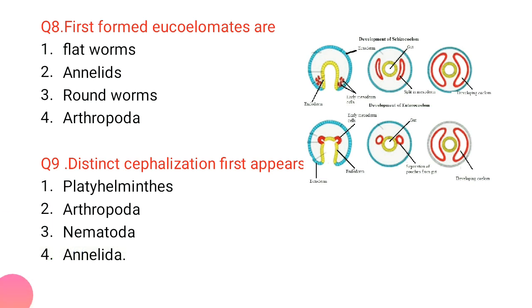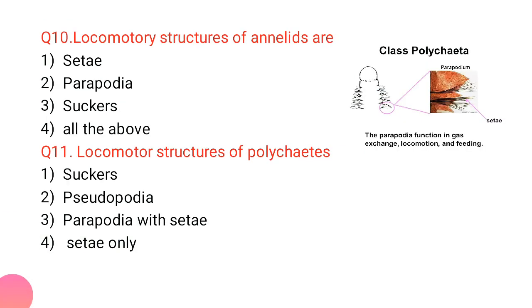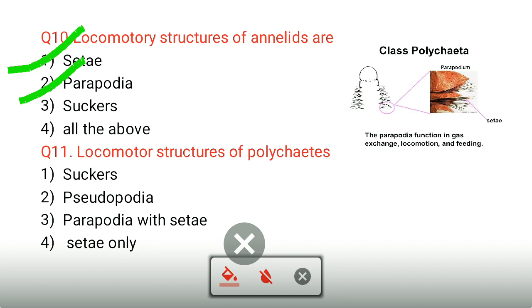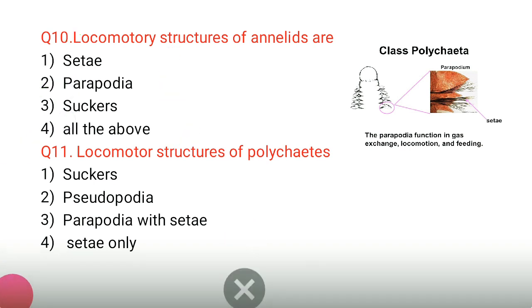The locomotory structures of annelids are parapodia and suckers. Suckers are present in Hirudinea because they are ectoparasitic forms — being parasitic in nature, they have suckers. All of these structures are correct locomotory structures for the respective annelid classes.